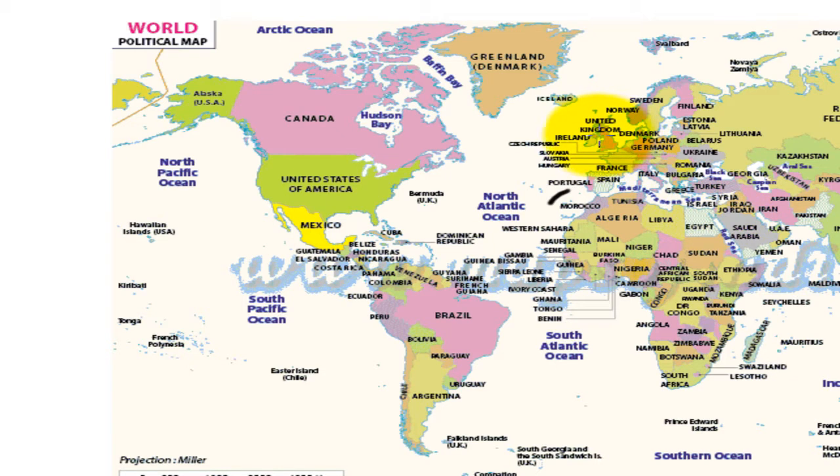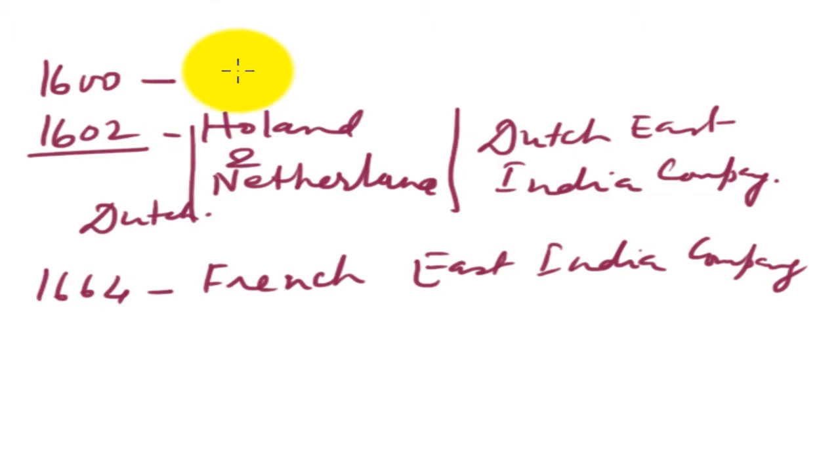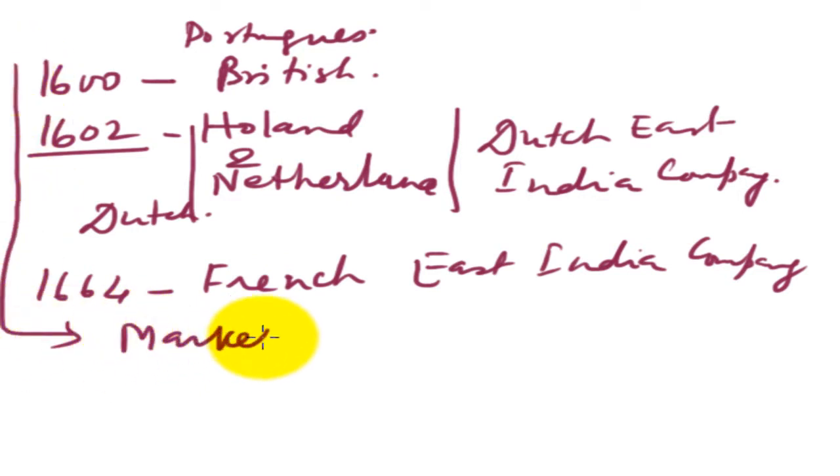The first one was the British East India Company. After that, the people from Holland. Then the French people. And Portugal were the first, Vasco de Gama, who came in India in 1498. Since all these people, the British people, the Portuguese, the Holland and Netherlands people, the Dutch and the French, they all came in India in search of market. As they all came to India in search of market, so there was a competition among them and the competition leads to a rivalry.